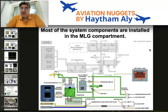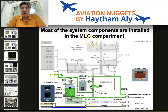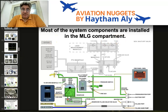The green hydraulic system supplies the thrust reverser of engine number one and also supplies the normal brakes. So if you need to find any component of the green hydraulic system, you need to go to the main landing gear compartment.